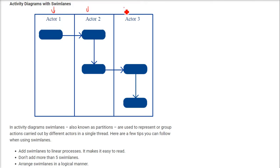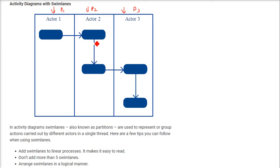These are the different swim lanes. In swimming we have different lanes, and similarly an activity diagram can have multiple swim lanes, also known as partitions — partition 1, partition 2, partition 3, and so on. These are used to represent a group of actions carried out by different actors in a single thread. For example, actor 1 does certain activities and actor 2 does others, and we group them accordingly.